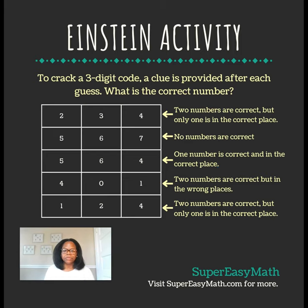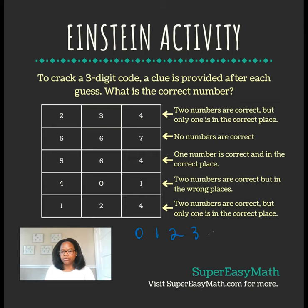Hey guys, it's Tiffany from Super Easy Math. Today's Einstein activity says to crack a three-digit code — a clue is provided after each guess. In order to solve this, I'm going to list out all the number possibilities we could have. The only numbers included in our chart are 0, 1, 2, 3, 4, 5, 6, and 7.